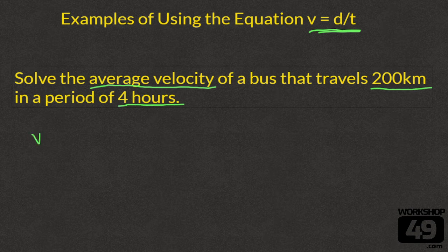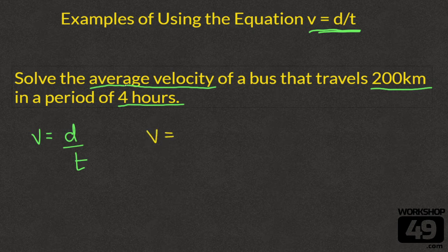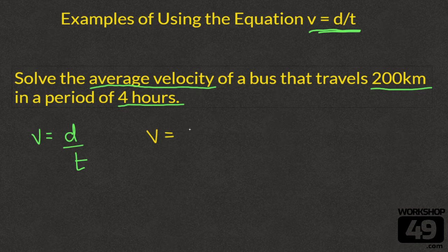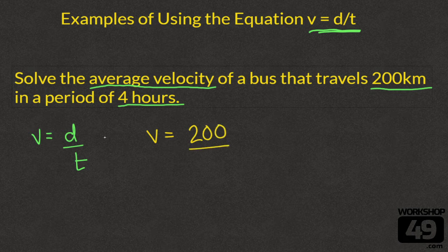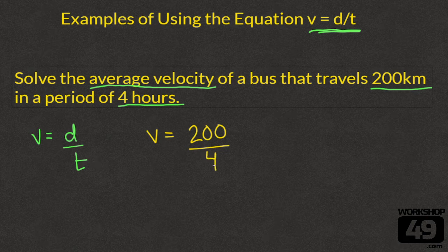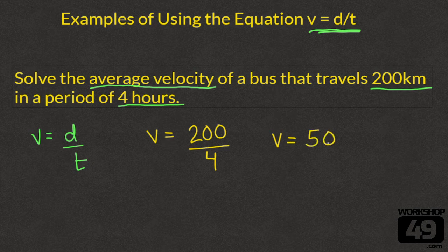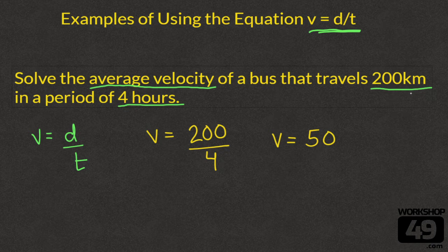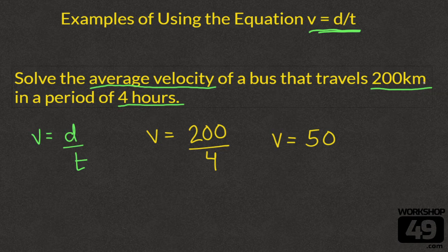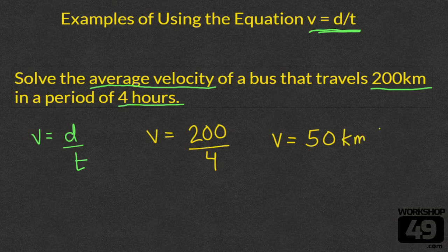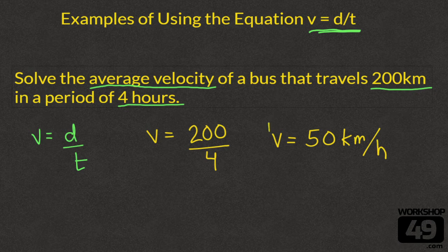So we can go ahead and set up our equation v equals d over t. We know that we're looking for the v value, this average velocity, and we know that the d, our distance traveled, is 200 divided by 4. We get that our velocity equaled 50. But what units? In this case you look at the units of the distance and the units of the time. We can see kilometers and hours. Clearly I am Canadian because we use kilometers. We do kilometers divided by hours, and that's our final answer.